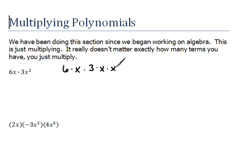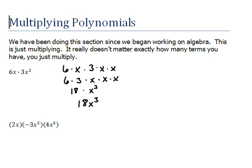So this is just a gigantic multiplication here. Multiplication is both associative and commutative, meaning that you can multiply in any order you want to. If I were to rearrange this so that I had all the numbers together and all of the x's together, that's a legal math move. Now we can multiply things that are alike — the numbers. 6 times 3 would be 18, and x times x times x is x cubed. When you multiply like bases, you add the exponents, so this is 18x cubed.